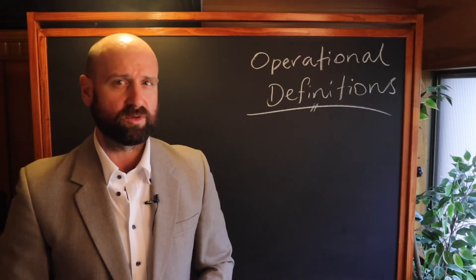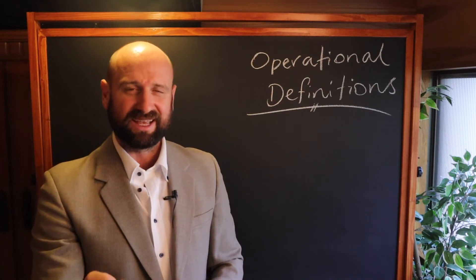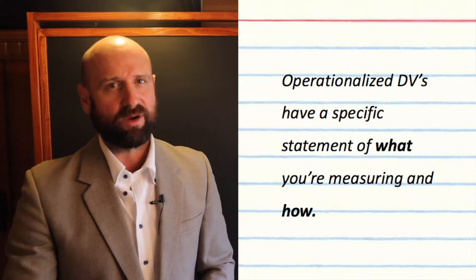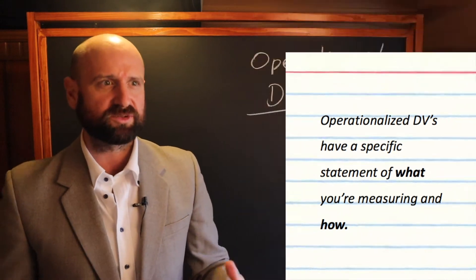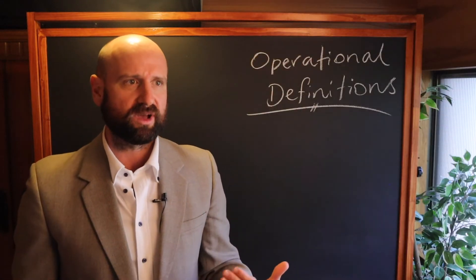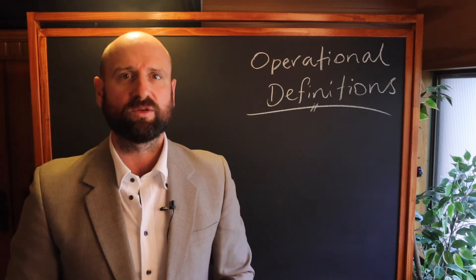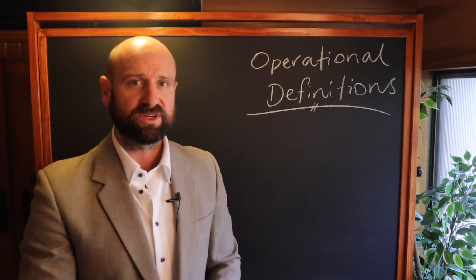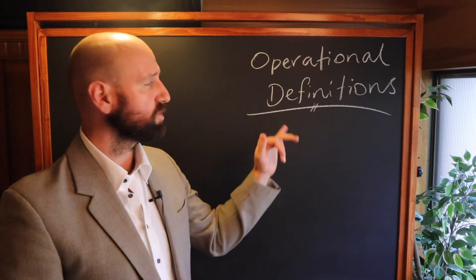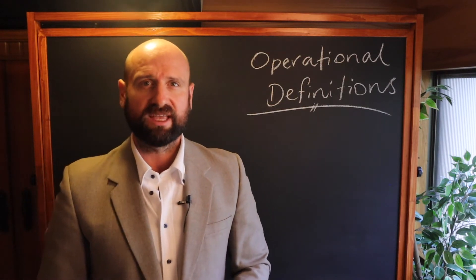For the dependent variable, when you write an operational definition, you have to write very specifically, exactly what are you measuring? How are you measuring it? So what device or instrument are you using? So many of you are doing some sort of comprehension test or some sort of test or a quiz or review. What is it that you're measuring? How are you measuring it? Okay, and so that is your operational definition of your IV and your DV.